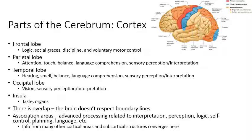Next you have the parietal lobe, starting at the blue strip of the primary somatosensory cortex and running back. Its posterior and inferior boundaries are a little loosely defined. The parietal lobe is responsible for attention — where you are directing your attention — also your sense of touch, sense of balance, understanding language, and interpreting and perceiving sensory stimuli. The blue strip in the front is your primary somatosensory cortex, where touch sensations are interpreted.